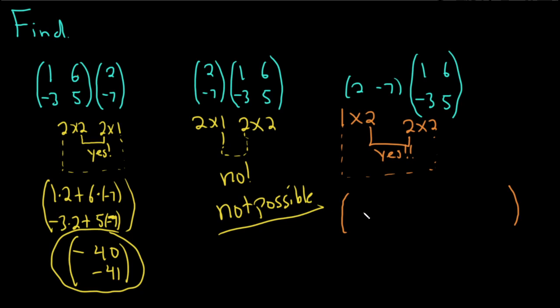So, to find the entry in the first row, first column, we use the first row, and the only row, and the first column. So, 2 times 1 plus negative 7 times negative 3. And then, this is in the first row, second column, so we use the first row, second column. So, 2 times 6 plus negative 7 times 5.